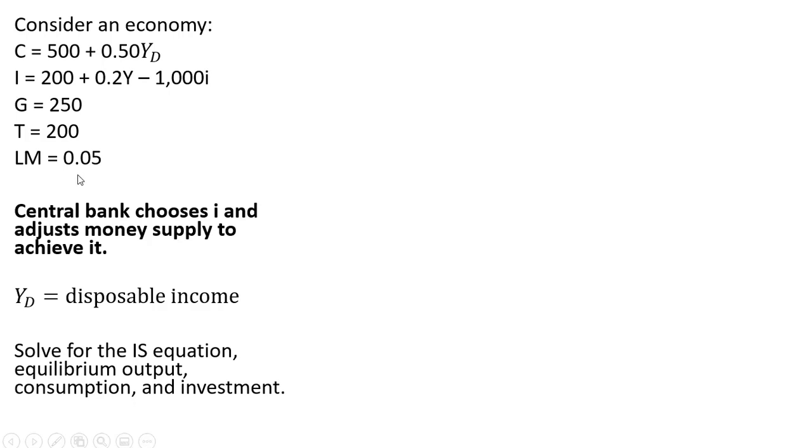and the LM curve is going to be horizontal at an interest rate of 5%. We're going to assume that the central bank chooses the interest rate and adjusts the money supply to achieve it. In that case, you'll get a flat or horizontal LM curve.